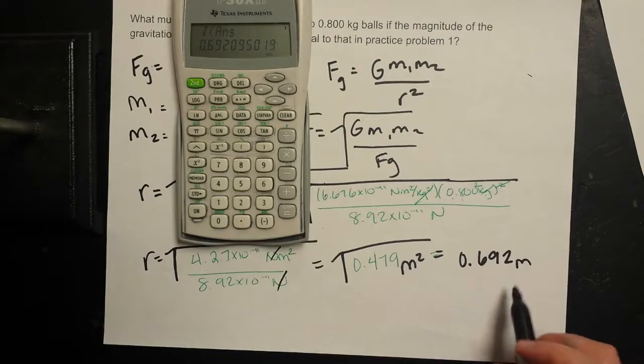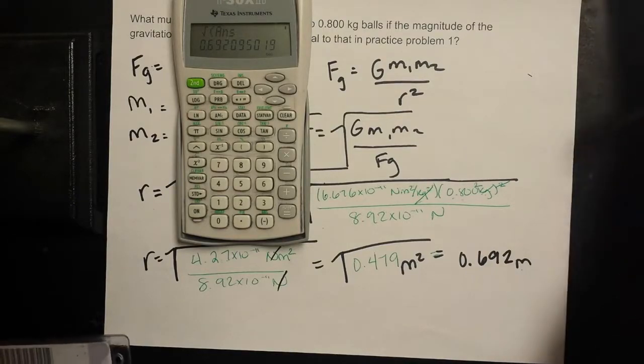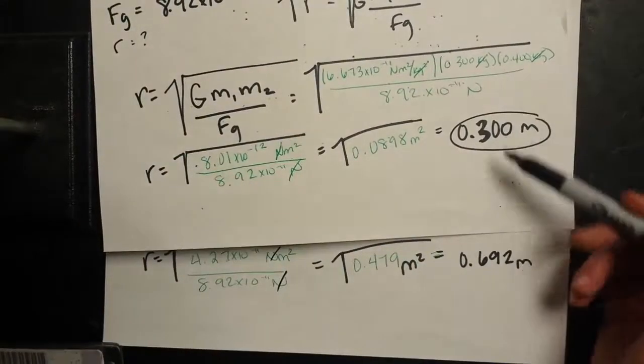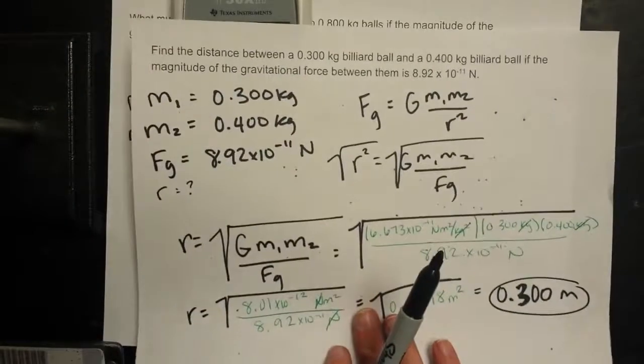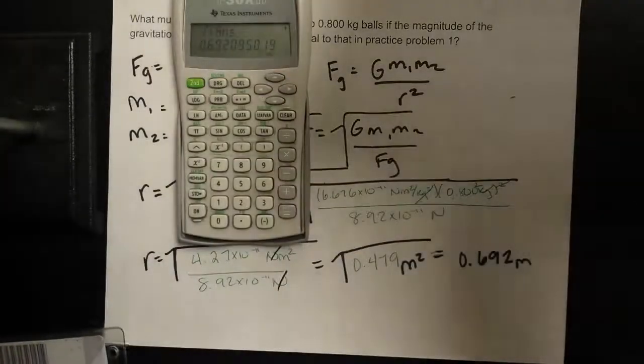So this is actually, they're roughly a little over twice as far away than the two smaller balls in practice problem one.